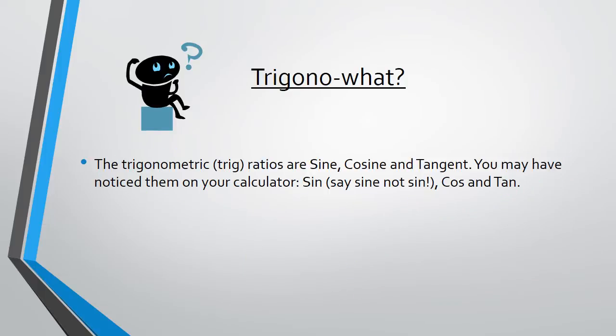The trigonometric or trig ratios are sine, cosine and tangent. You may have noticed them on your calculator. Sine - say sine and not sin - cos and tan.